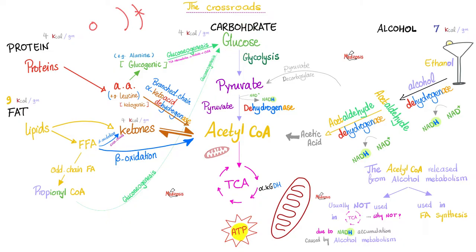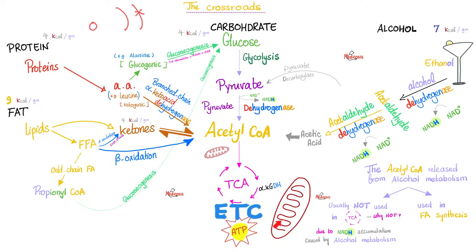Glucose is converted to pyruvate through glycolysis, and then throughout many steps you make even more ATP. This is called the tricarboxylic acid cycle, or Krebs cycle, followed by the electron transport chain. These last two processes happen in the mitochondria under aerobic conditions.